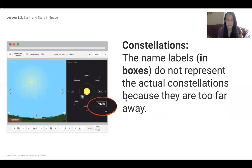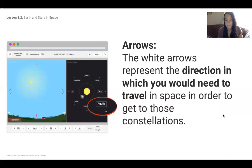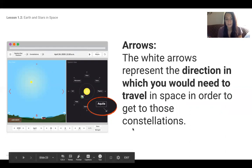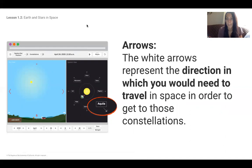The name labels in the boxes don't represent the actual constellations because they're too far away. But the white arrows represent the direction in which you need to travel to get to this constellation. It's just a model to show if you wanted to get to this constellation, you'd have to travel this way. If you wanted to get to Orion up here, you'd have to go to the sun and then travel up.